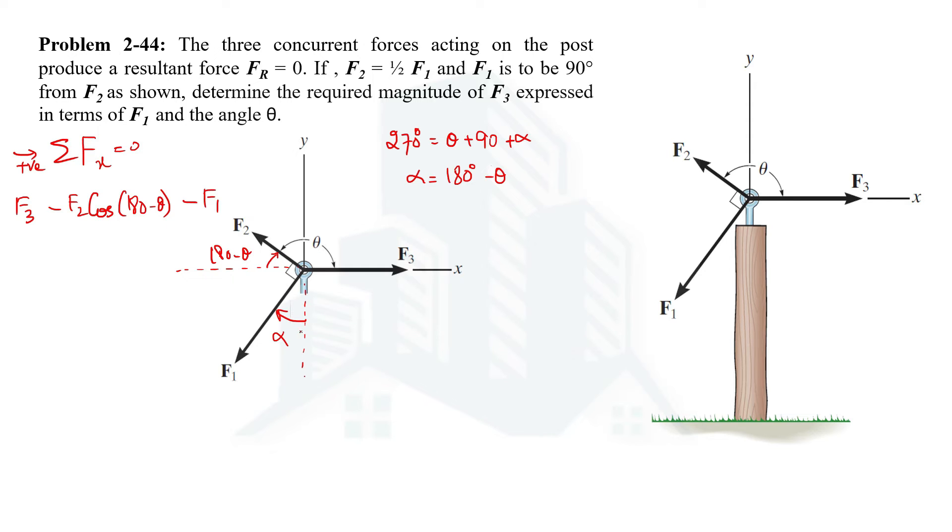F2 would be negative because of its leftward direction, cos(180 - theta) is the x component of F2. For F1 it will again be leftward, hence negative. Now this angle alpha is with the y-axis, so instead of cos we will be using sine.